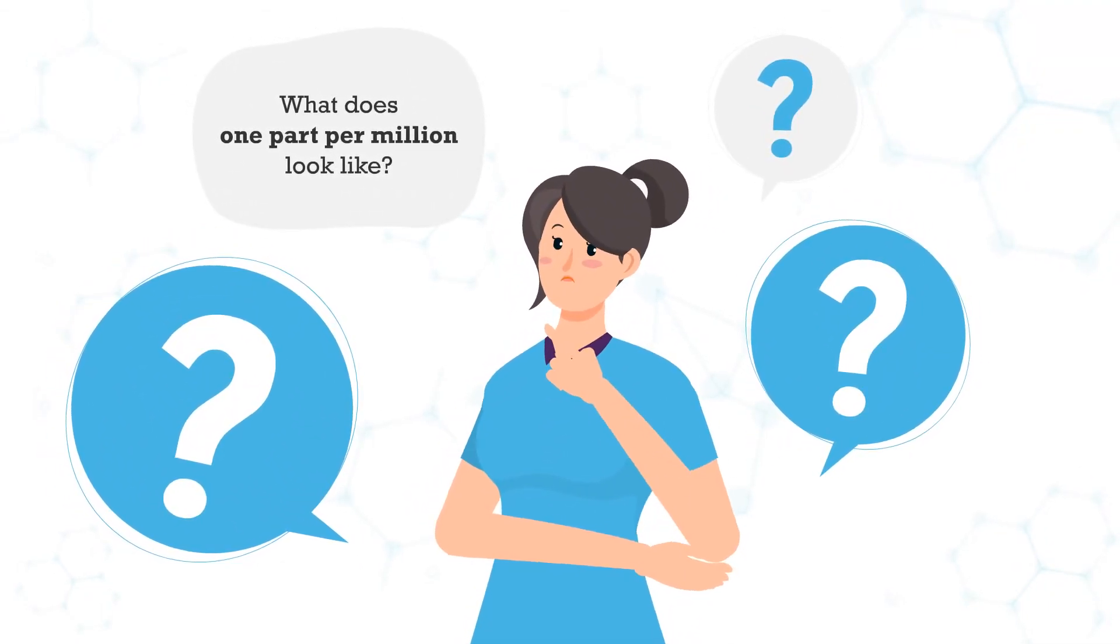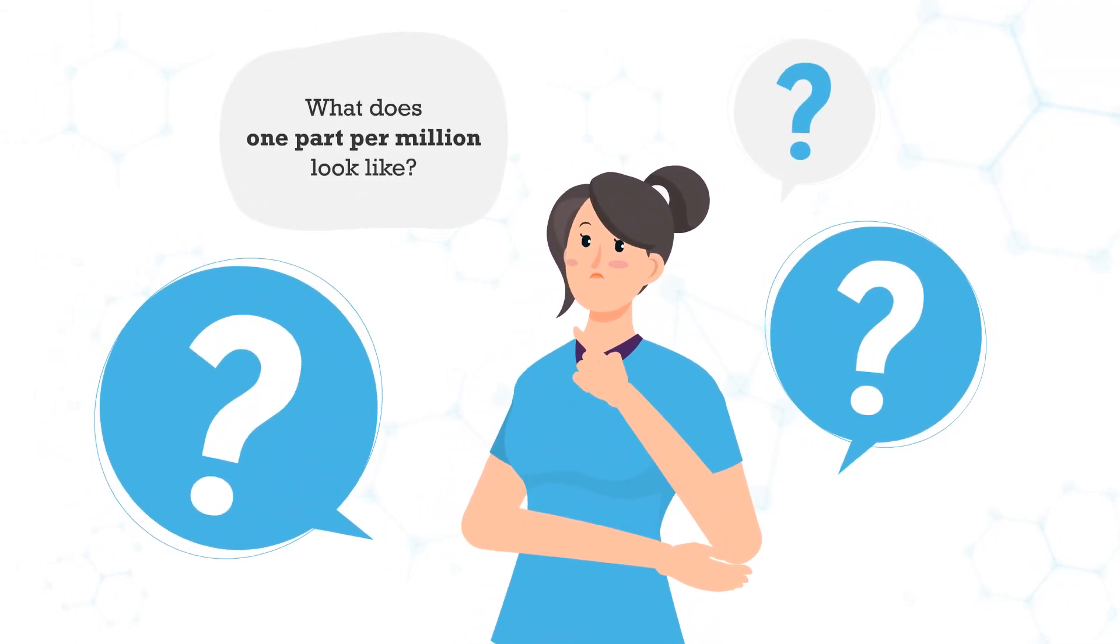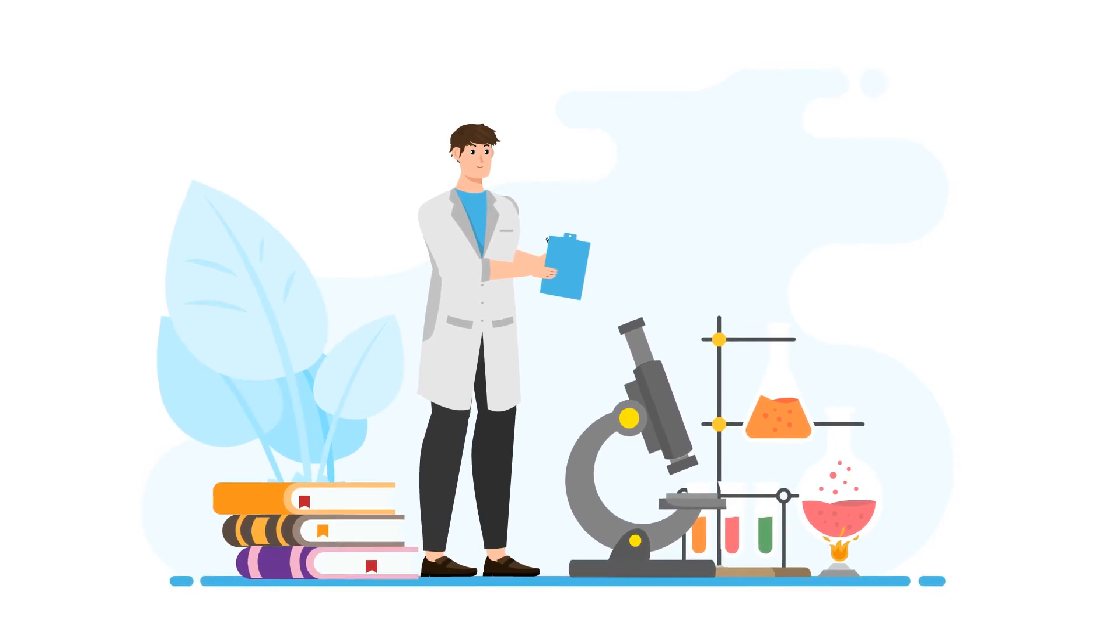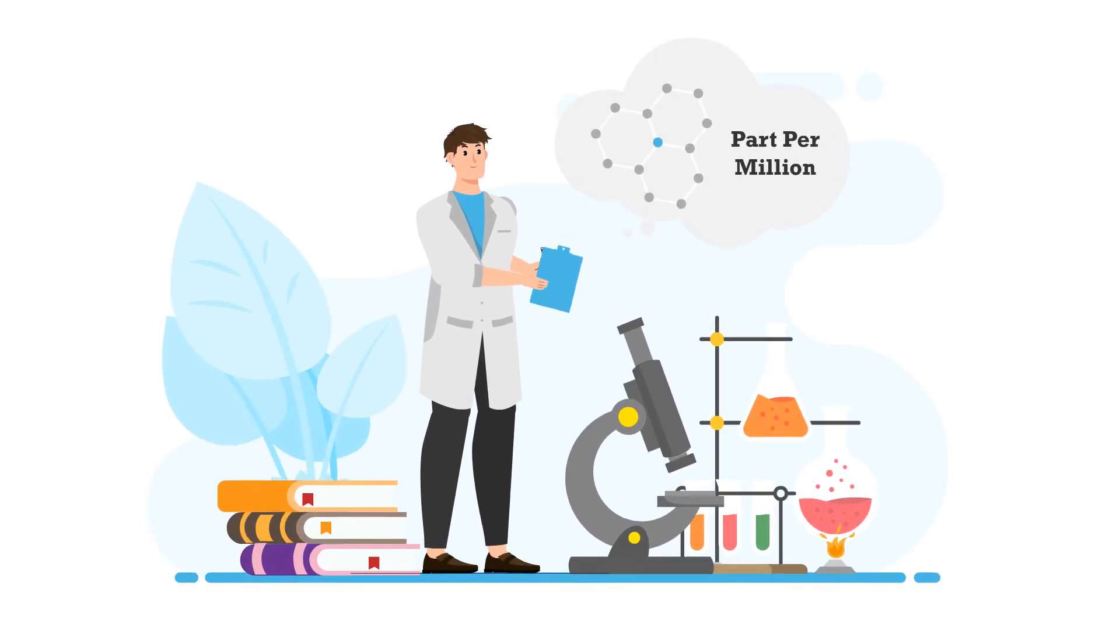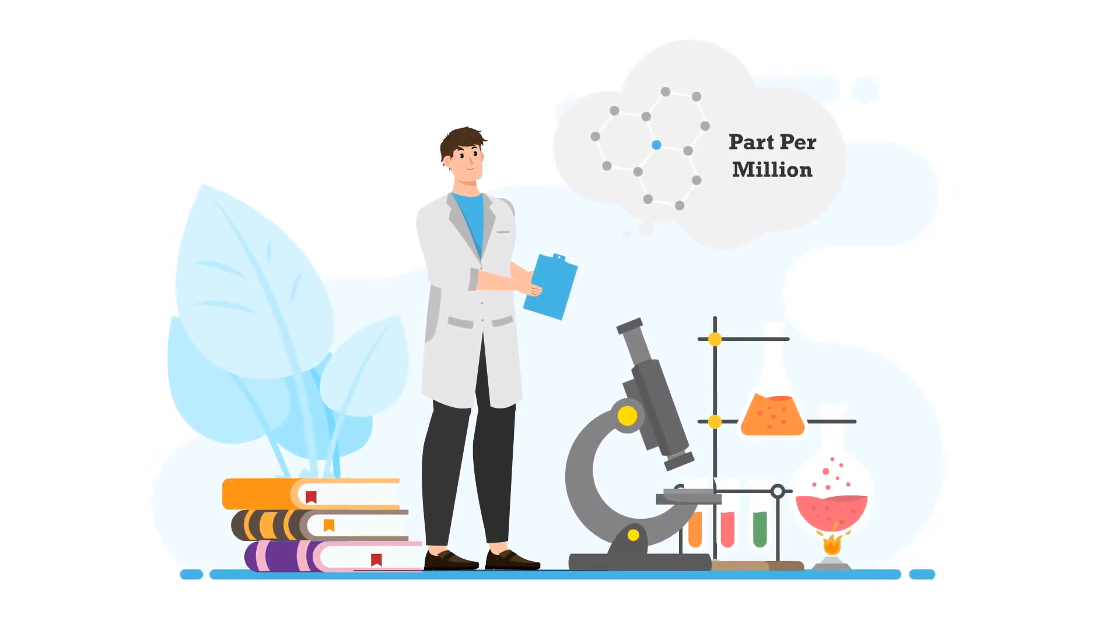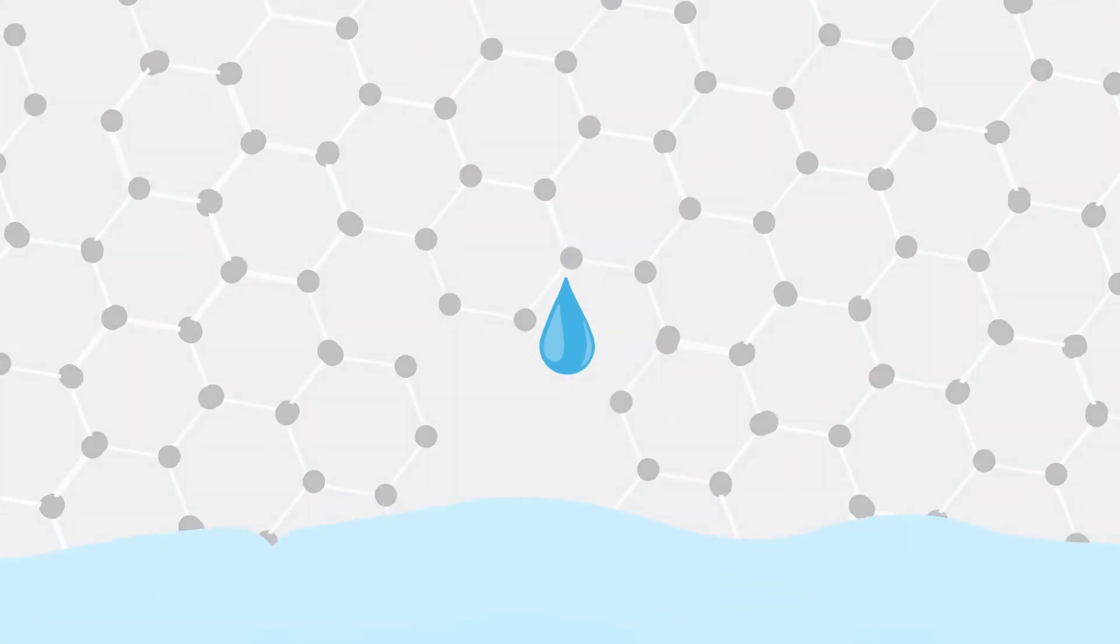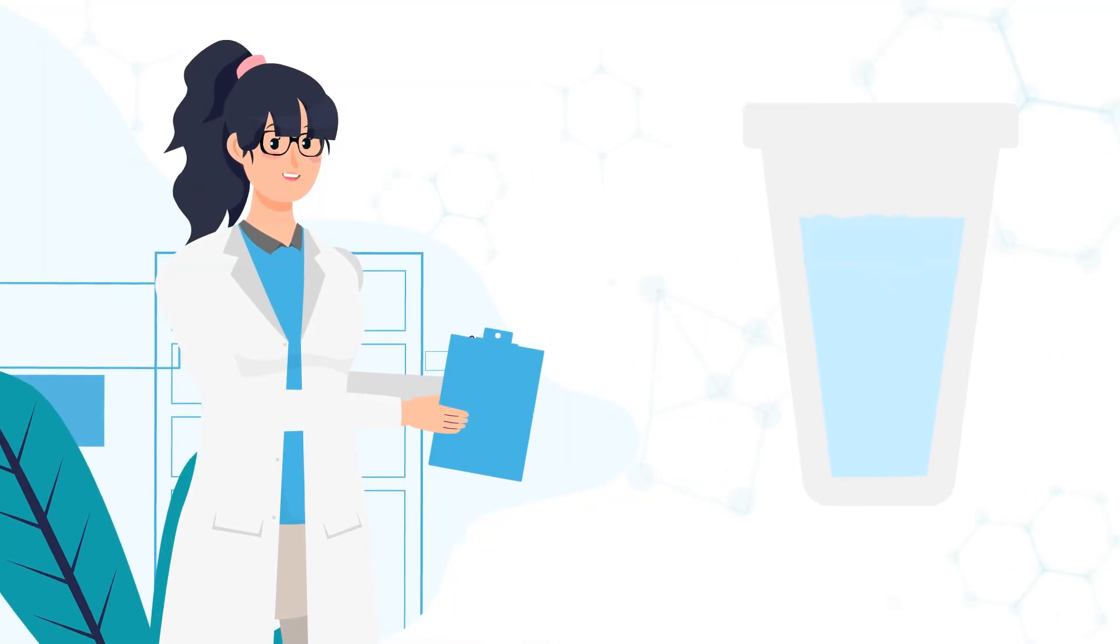What does one part per million (ppm) look like? Parts per million is the measurement scientists and other water quality experts use to talk about concentration. It is one part of something in a million parts of something else. This is how we measure things that are dissolved in water.